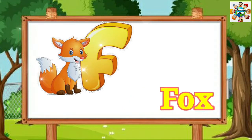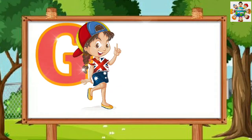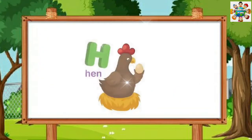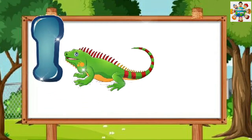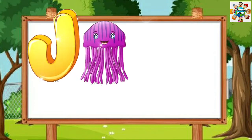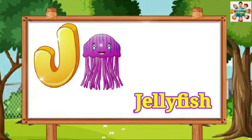F is for Fox. G is for Girl. H is for Hand. I is for Iguana. J is for Jellyfish.